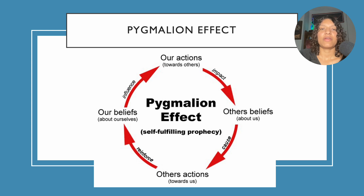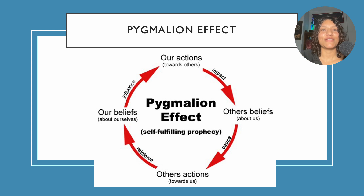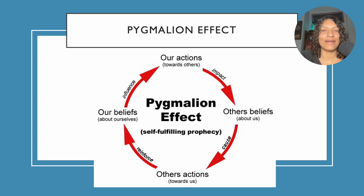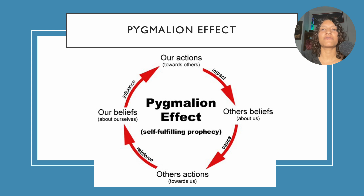A Harvard University professor and an elementary school principal told elementary school teachers that, based on their students' standardized test scores, certain children were late bloomers who could be expected to experience growth spurts. In truth, no such tests existed — it was part of a research study, and the children designated as growth spurts were chosen at random. Findings showed that teachers then changed their expectations around those students, having higher academic expectations for them.